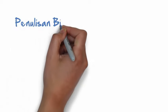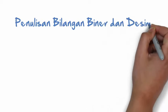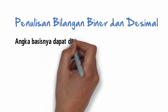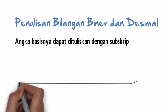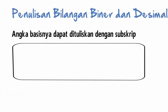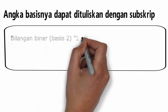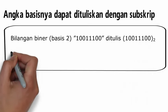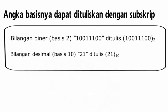Dari kebingungan saat menggunakan sistem bilangan yang berbeda, penulisan angka basisnya dapat dituliskan dengan subscript atau index. Misalnya angka binary 1 0 0 1 1 1 1 0 0 bisa dituliskan dengan menambahkan index 2. Begitu juga dengan angka decimal, 21 dapat ditulis dengan 21 index 10.